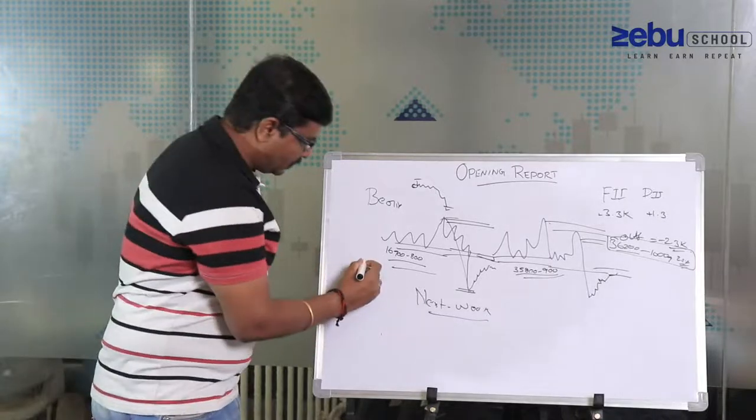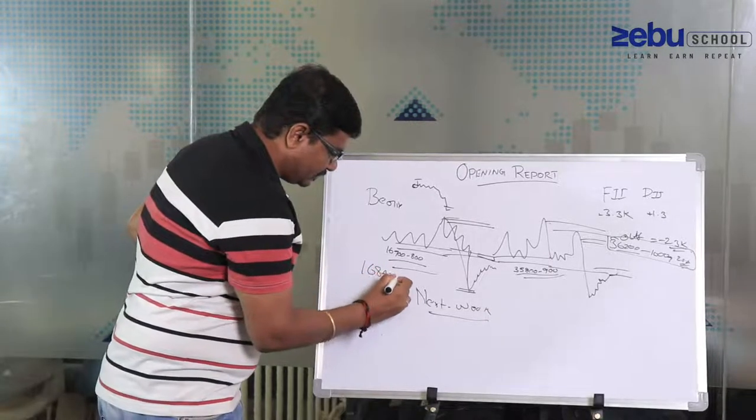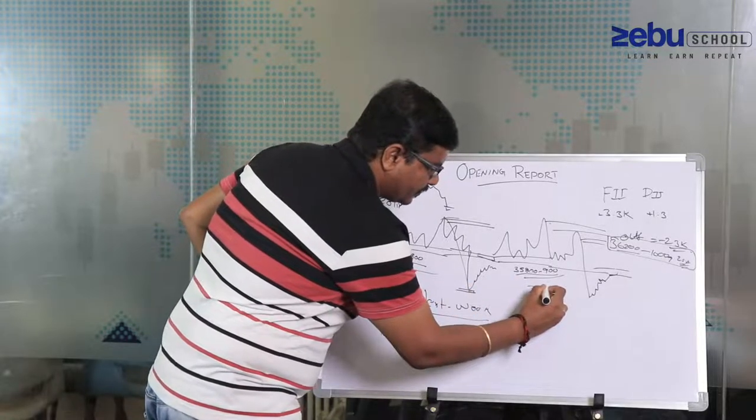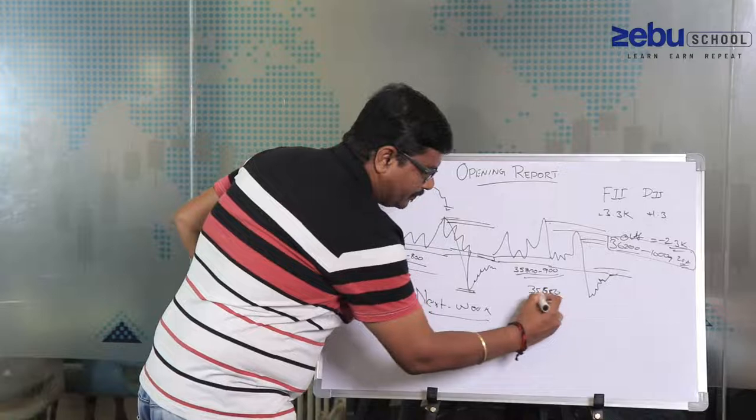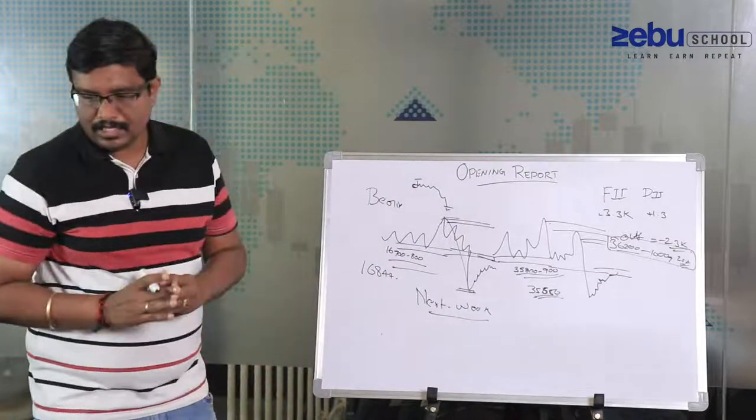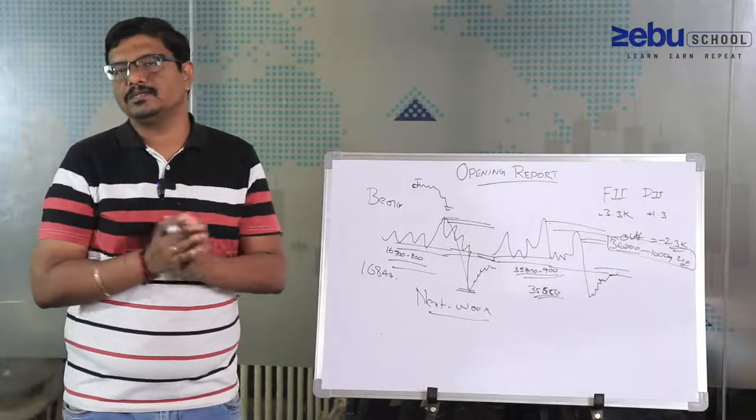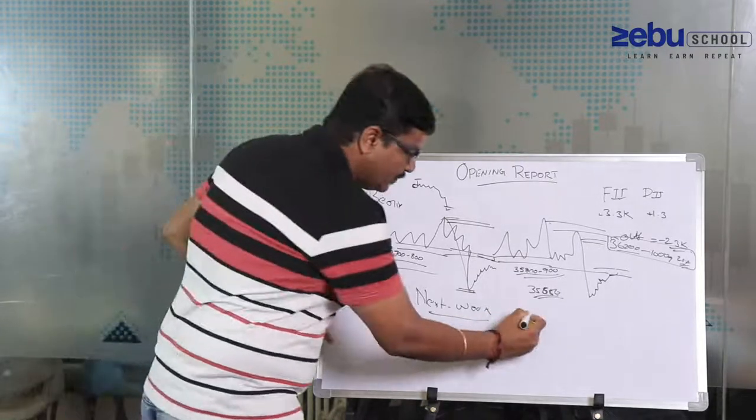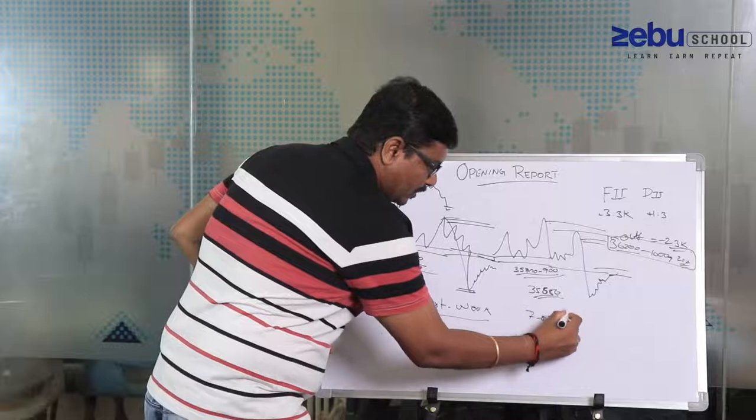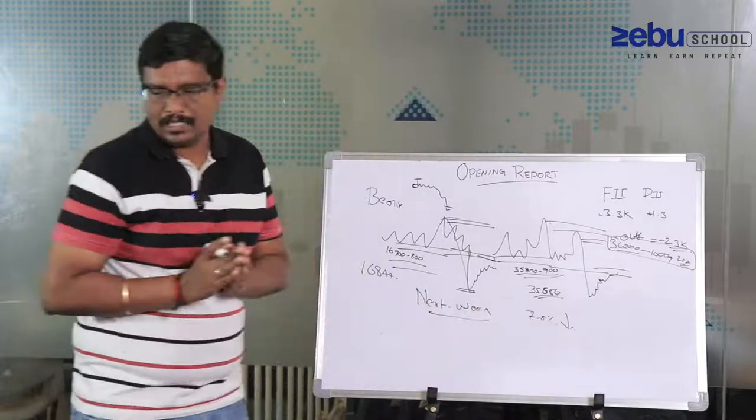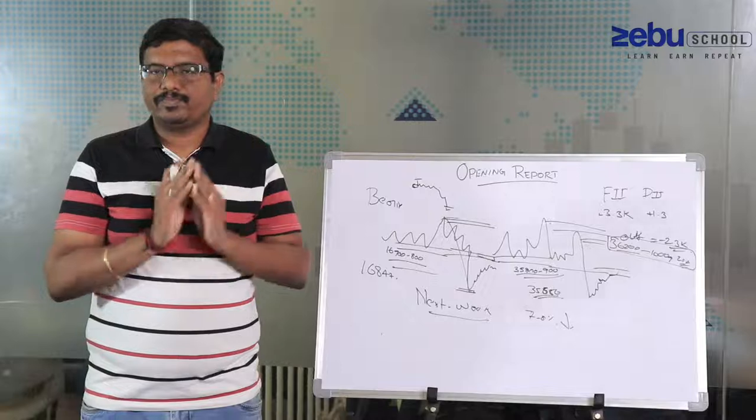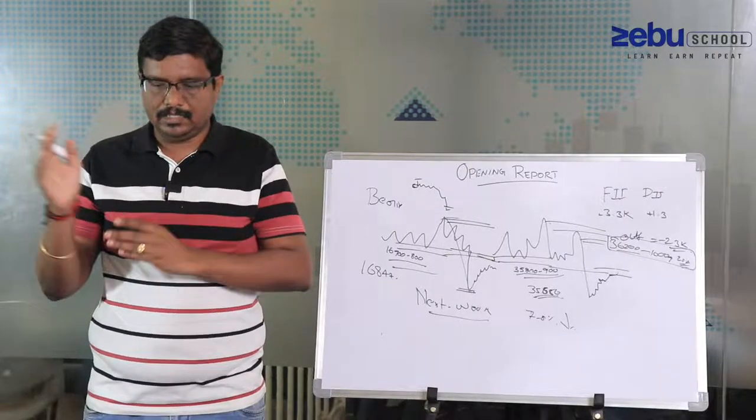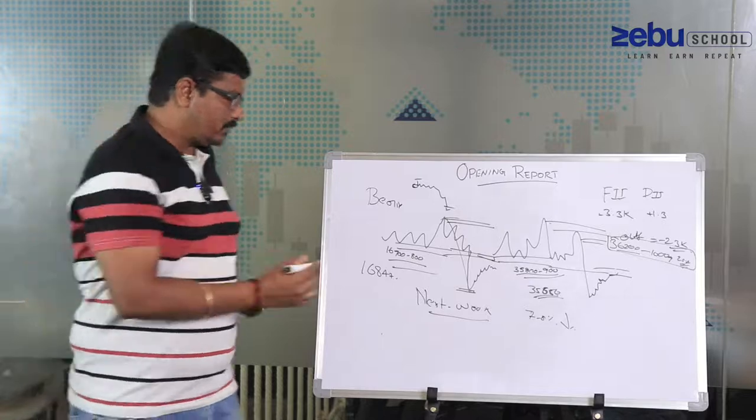Nifty is somewhere around 16,847 and Bank Nifty is 35,680. This is the place the market is at now. All the news flow has been over and the expected news is over, so VIX is down 7 to 8%. Still it's trading closer to 20, but yesterday it was trading around 21 rupees. It's done its part.